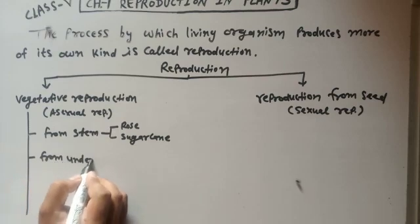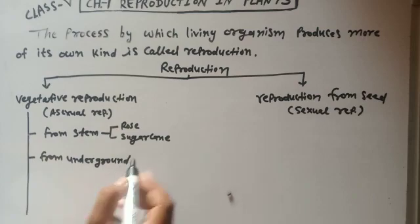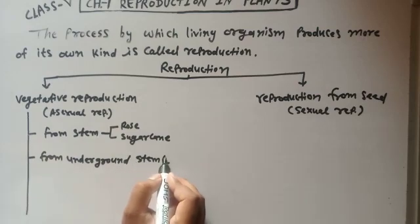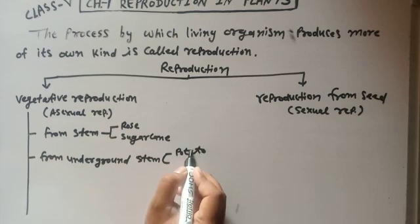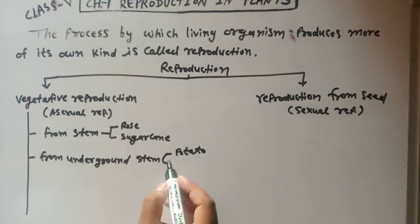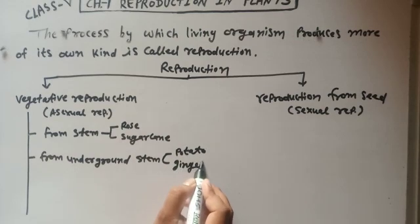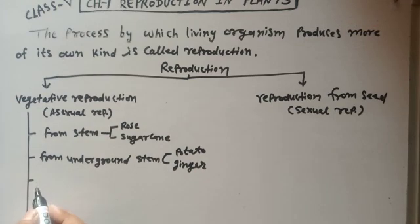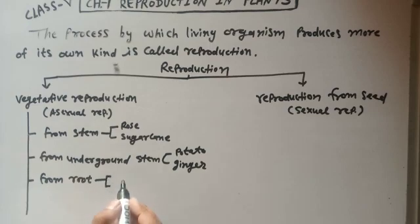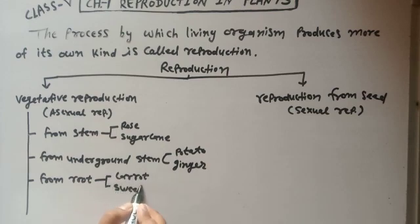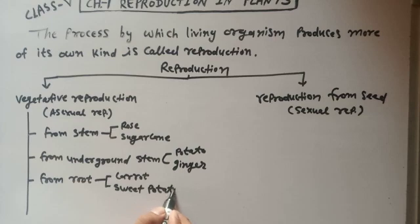Some plants grow from roots. Its examples are carrot and sweet potato. And some plants grow from spores.